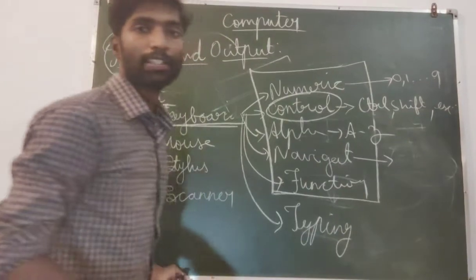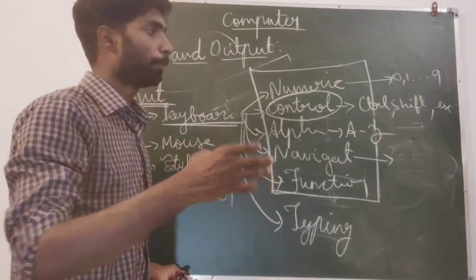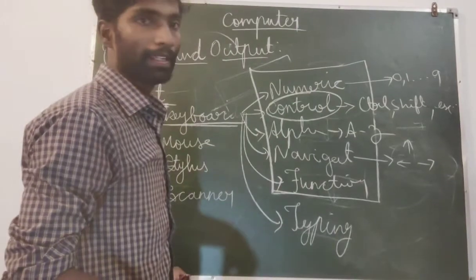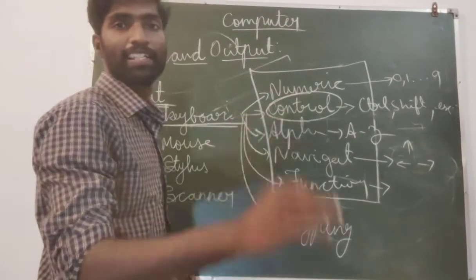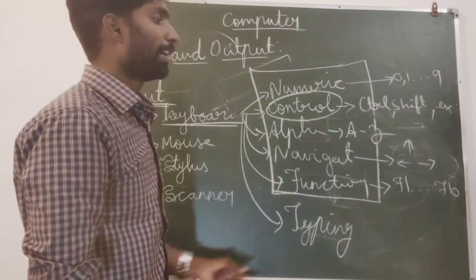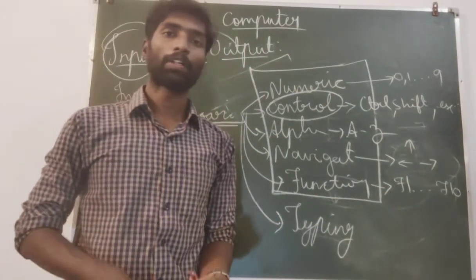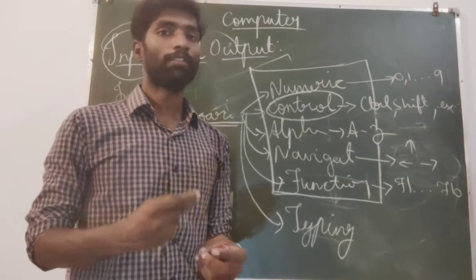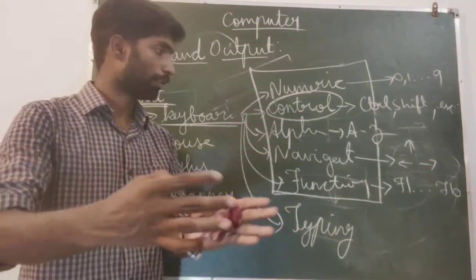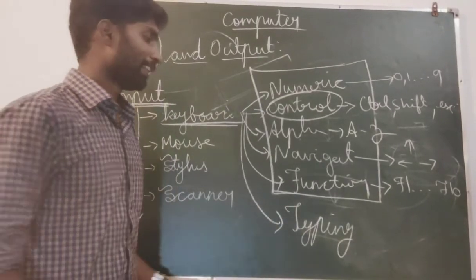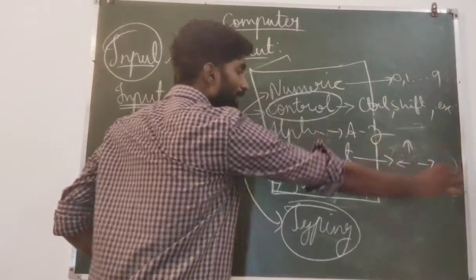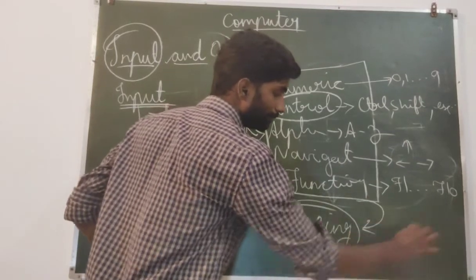And navigation keys? Navigation means direction, navigating, pointing something. How we will point? With help of the arrow keys. After function keys - F1 to F12 plus print screen, number lock, these all will also come under function keys. At last typing key. Can you guess what is a typing key? Combination of all these will come under a typing key.